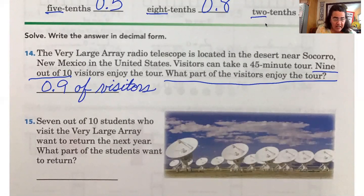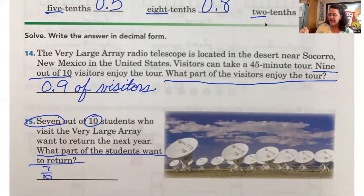Okay. Now seven out of ten students who visit the Very Large Array want to return the next year. What part of the students want to return? My question is what part of the students want to return? Circling ten. Circling seven. It would be seven out of ten. But we have to write it as a decimal. So how would I do that? Zero point seven. So seven tenths of the students.